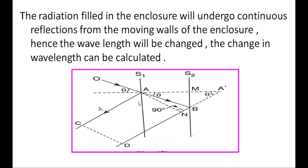Now consider the walls of the enclosure. Let the two walls be S1 and S2. The radiations inside the enclosure are reflected by these walls. As the enclosure expands, the walls move outward and the wavelength of the radiation reflected from the wall will change. We need to calculate how much the wavelength changes.